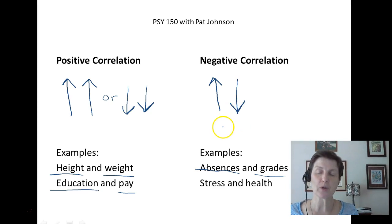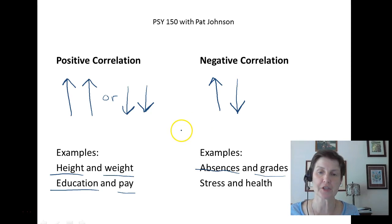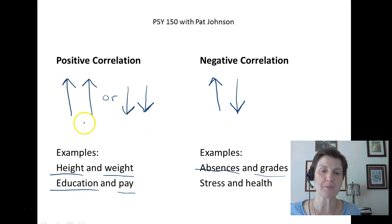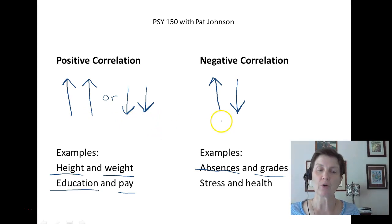Notice we're not using the word 'cause' — we never want to use the word cause when talking about correlations; we're just talking about the relationship. So again, positive doesn't mean good; it just means the variables are moving in the same direction. In a negative correlation, as one goes up, the other goes down.